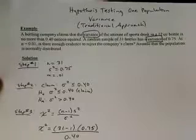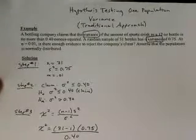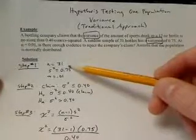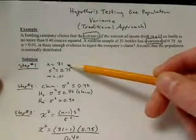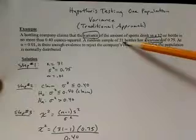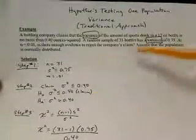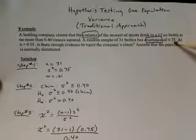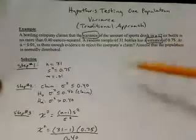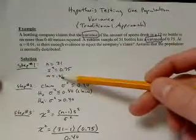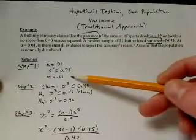We're going to assume that the population is normally distributed. In the first step of hypothesis testing, we need to identify the given values in symbolic form. We have a sample of size 31, so n equals 31, and the variance of the sample is 0.75. Our level of significance, alpha, is 0.01, so we've identified the given values.